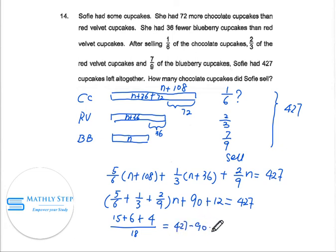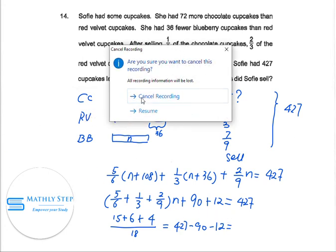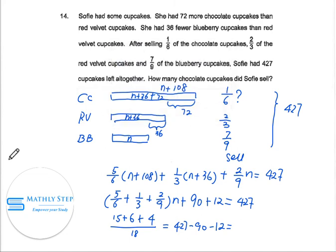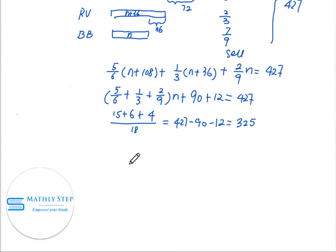This is 15, this is 6, this is 4, equal to 427 minus 90 minus 12, equal to 325. And this is equal to 25 over 18. N equal to 325. From here we can find out N equal to 234.